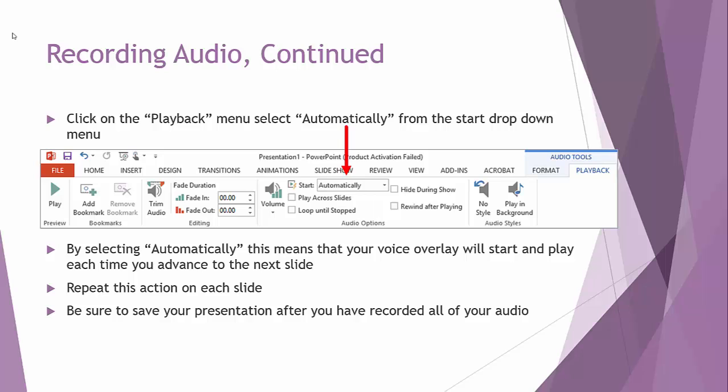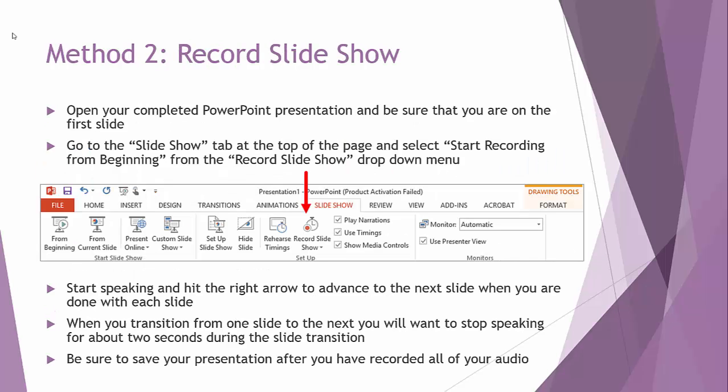You're going to repeat this action on each slide — change the drop-down to 'Automatically' on slide one, then go to slide two and do the same, and so on for each slide. Always be sure to save your presentation, and especially after you've recorded all your audio, make sure it is saved. The second method is Record Slideshow, which is actually the one we recommend using.